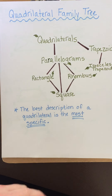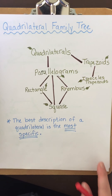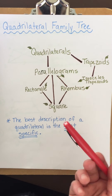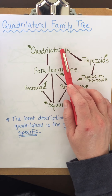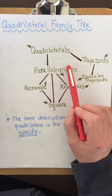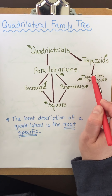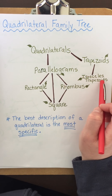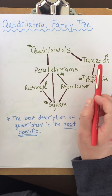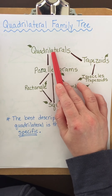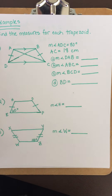I wanted to show you the quadrilateral family tree. We have quadrilaterals at the top; trapezoids are a quadrilateral but not a parallelogram because there's only one pair of parallel sides. From trapezoids we can draw another branch going to isosceles trapezoids — so isosceles trapezoids are trapezoids and they're quadrilaterals.